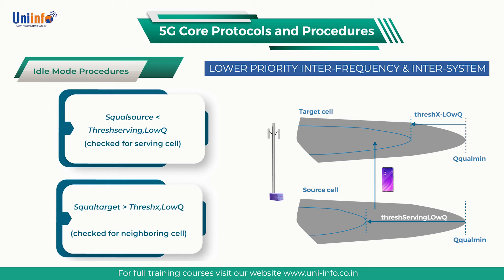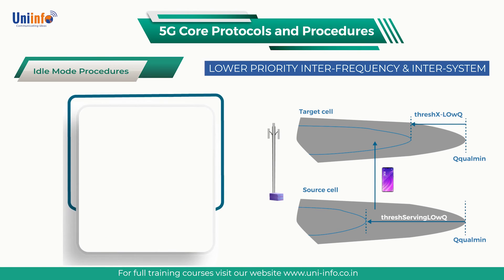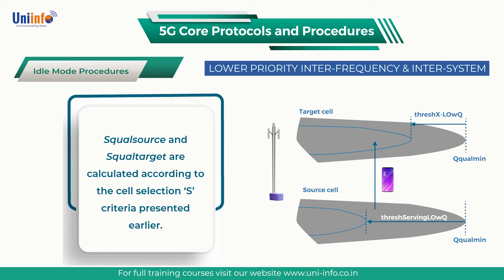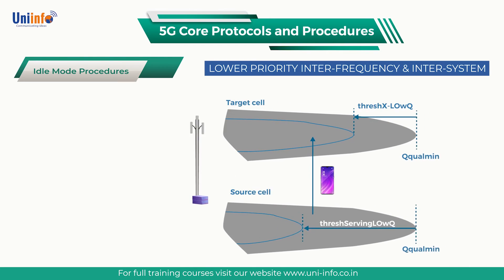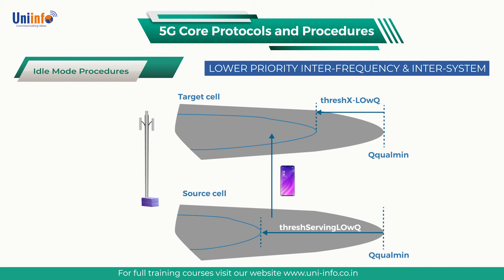Condition 1 is checked for the serving cell. Condition 2 is checked for the neighbouring cell. S-Quality source and S-Quality target are calculated according to the cell selection S criteria. SIB4 broadcasts threshold low quality for inter-frequency neighbours whereas SIB5 broadcasts threshold low quality for inter-system neighbours. The values of both threshold serving low quality and threshold low quality can range from 0 to 31 dB with a step size of 1 dB. Ignoring the impact of any offsets, these thresholds define margins relative to Q quality minimum as shown on screen.